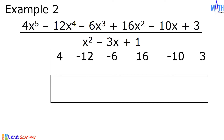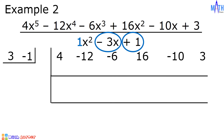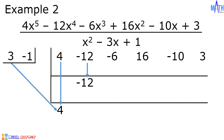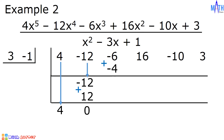For the divisor, the leading coefficient is 1. So let us look at the coefficient of x. The coefficient of x is negative 3. Let us write the opposite, which is positive 3, on the left side. For the constant term, the constant term is positive 1. Let us write the opposite, which is negative 1, on the left side. Then let us divide. Bring down 4 in row 5, and bring down negative 12 in row 3. 3 times 4 is equal to 12. Negative 1 times 4 is equal to negative 4. Let us add: negative 12 plus 12 is equal to 0. Negative 6 plus negative 4 is equal to negative 10.